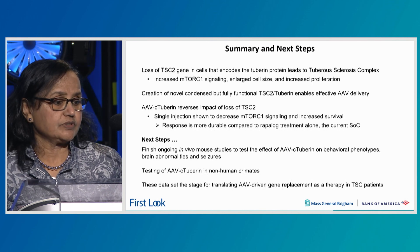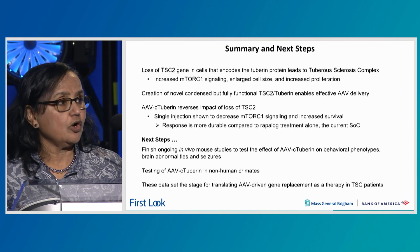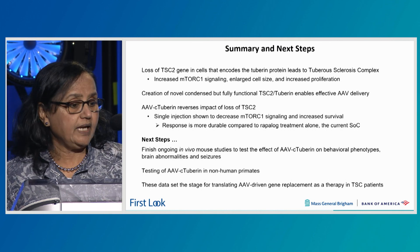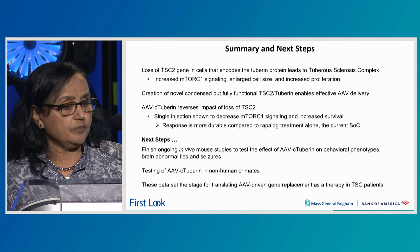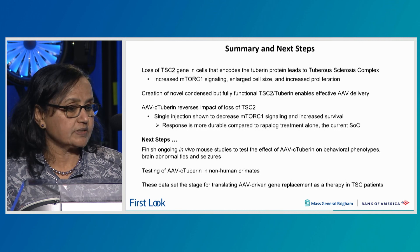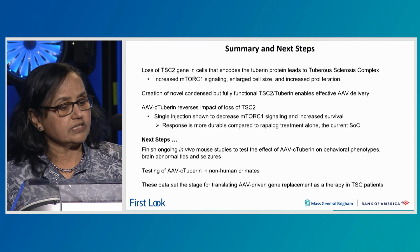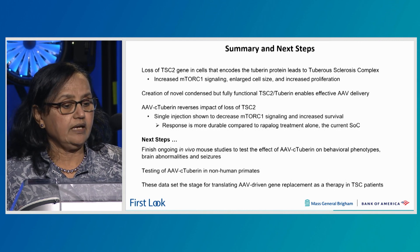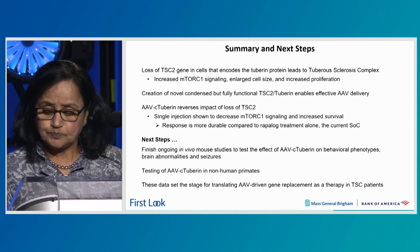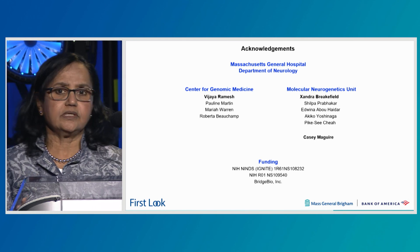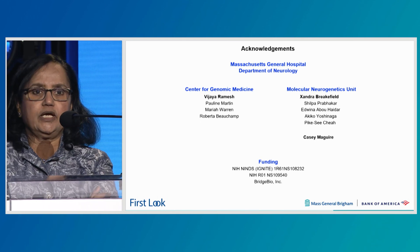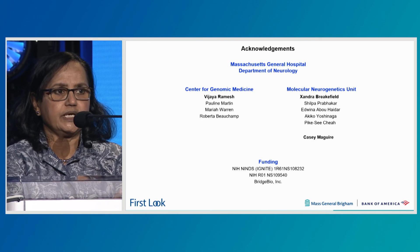The next steps are to finish ongoing in vivo mouse studies testing the effect of AAV C-tuberin on behavioral phenotypes, brain abnormalities, and seizures, and to test AAV C-tuberin in non-human primates. These data should set the stage for translating AAV-driven gene replacement therapy for TSC patients. This work will take approximately one to two million dollars from outside resources to complete.